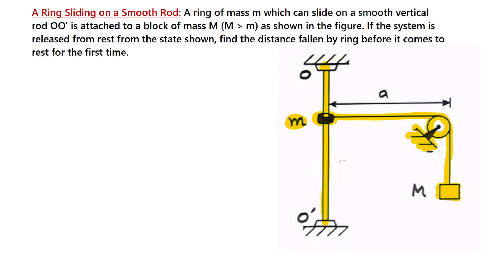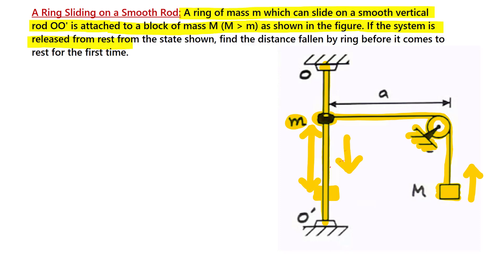The system is initially at rest and is released from rest. What is happening is this mass M is going down and mass m is going up. The question asks: what is the distance traveled by mass M when the ring comes to rest for the first time?